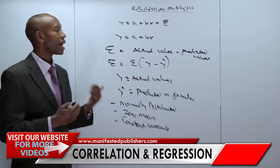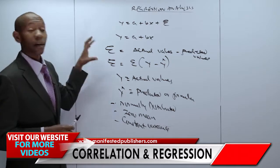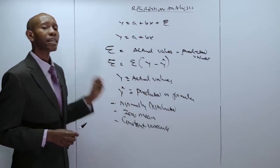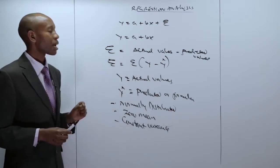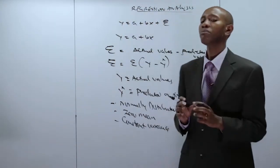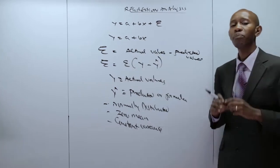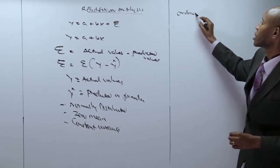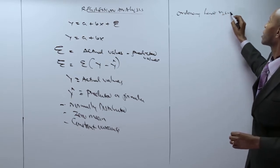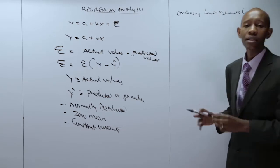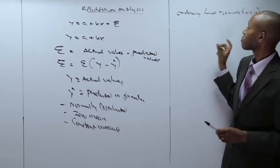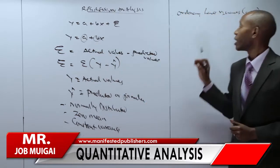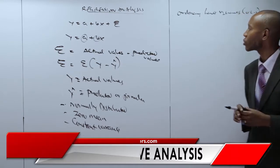That will be looked at in a later discussion. The challenge would then be to determine the values of parameters a and b in the linear regression equation y equal to a plus bx. There are various methods that can be used, but perhaps the most efficient would be the ordinary least squares procedure — the OLS procedure — which is one of the most efficient techniques for determining the values of parameters a and b.